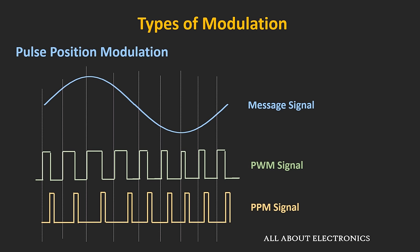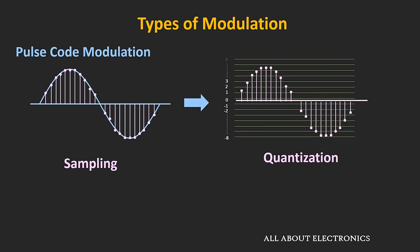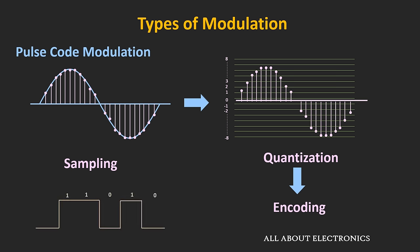Now let's move to the next modulation scheme. In pulse code modulation, the message signal is sampled at finite intervals and the sampled value is quantized using the quantization process. Then using an analog-to-digital converter, the message signal is encoded. For example, if the sampled value is encoded in 5 bits, then for every sampled value we get a pulse code of 5 bits. This is a brief overview of pulse code modulation; future videos will cover it in detail.